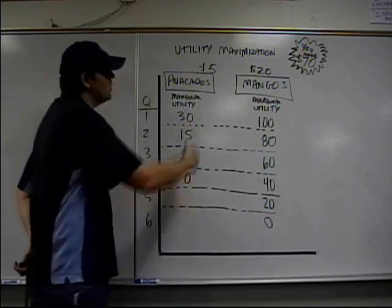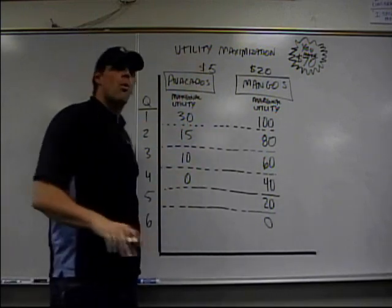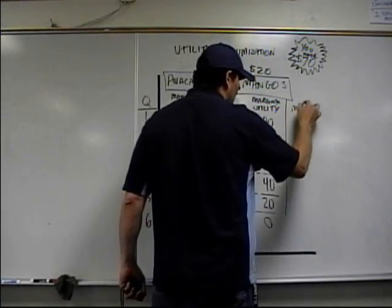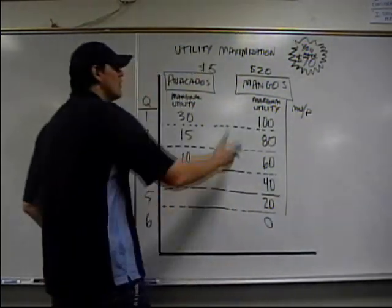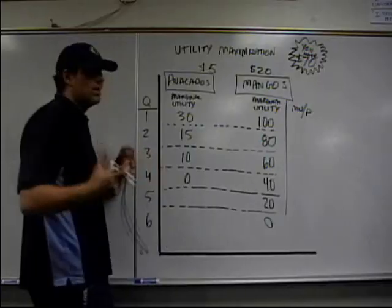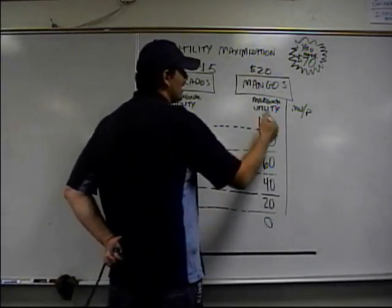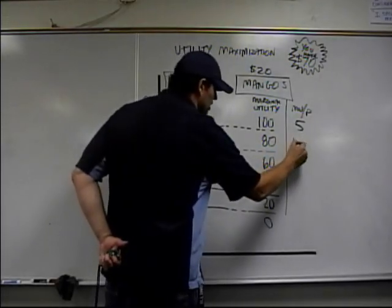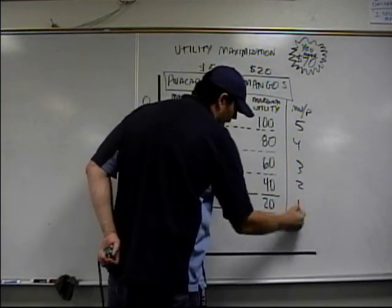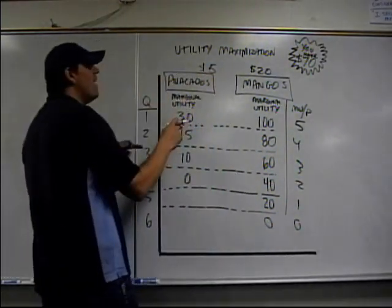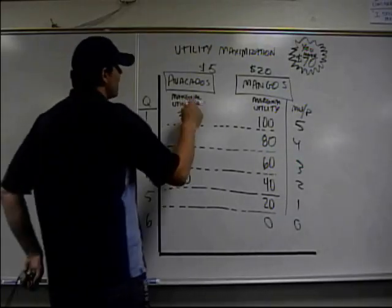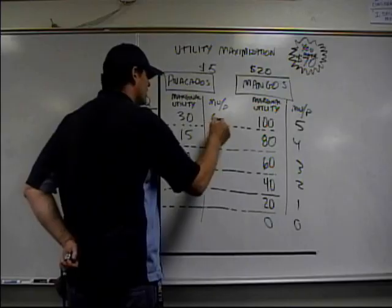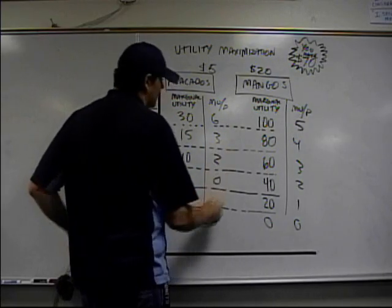The additional utility you get from each new unit is important, but what you really have to calculate is the marginal utility per dollar spent. So if I get 100 utils but I have to spend $20 to get it, then I only get 5 utils per dollar spent. The next mangoes give 4, 3, 2, 1, and 0 utils per dollar. Over here for avocados at $5, the marginal utility per dollar is 6, 3, 2, and 0.